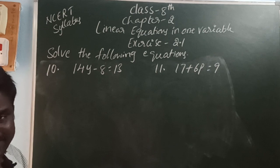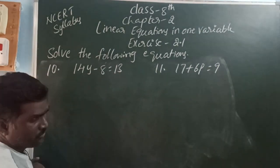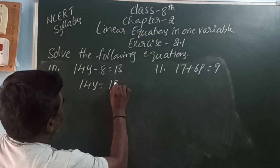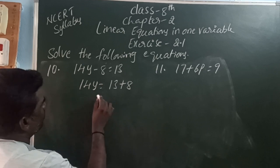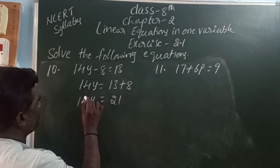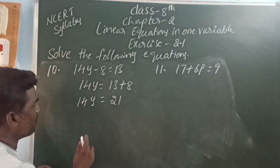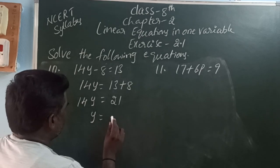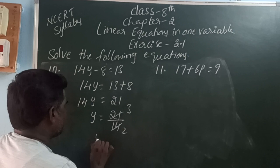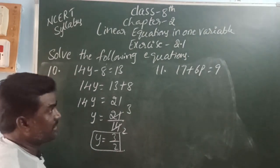14y minus 8 is equal to 13. What is the variable? Y. Minus 8 is moving to the right side and it becomes plus. So 14y is equal to 13 plus 8, which is 21. 14y means 14 into y. The multiple 14 is going to the right side and it becomes divided. So y is equal to 21 by 14. Simplifying by 7: y is equal to 3 by 2. The value of the variable is 3 by 2.